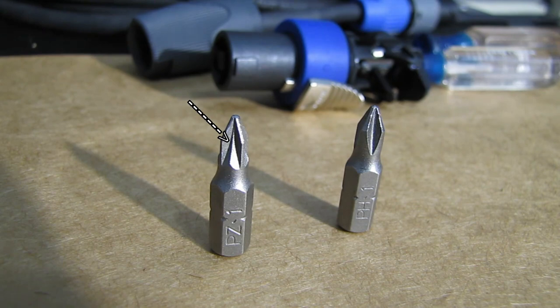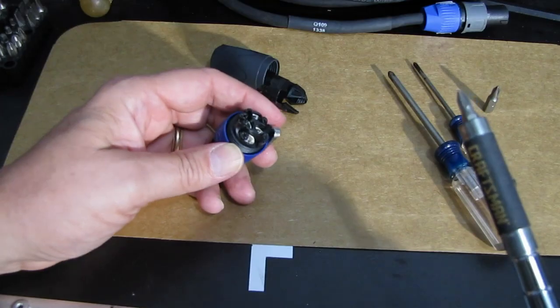But if you notice, see that little ridge in the middle of the PZ bit there on the left? As you notice, that ridge does not exist on the one on the right. And that ridge is just running right down in the middle near the tip.